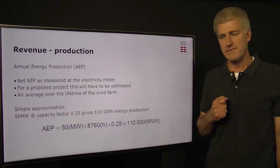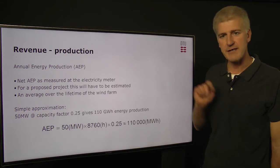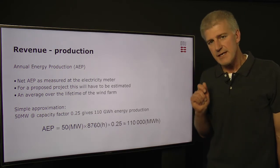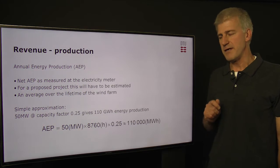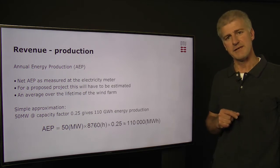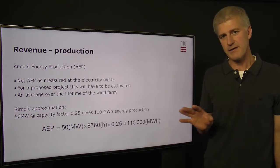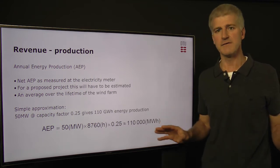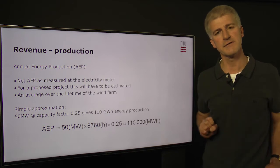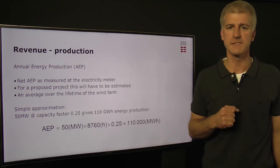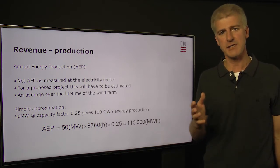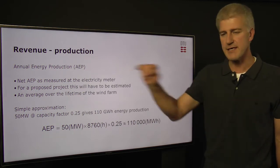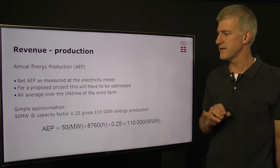On the production side of things, the key figure here is the annual energy production. We need the net AEP as measured at the electricity meter. This means we can't use information from the wind turbines themselves, because we have losses through the cables, transformers, and switchgear before we actually get to the public grid. So we need to take it as a net figure at the meter.